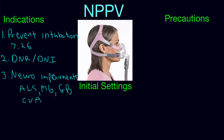Let's talk briefly about the initial settings you want to set the patient up on. We're going to have to choose an IPAP — an inspiratory positive airway pressure — and a good starting point on the board exam would be 12. Then we have to select an expiratory positive airway pressure, and we want to start around 5.